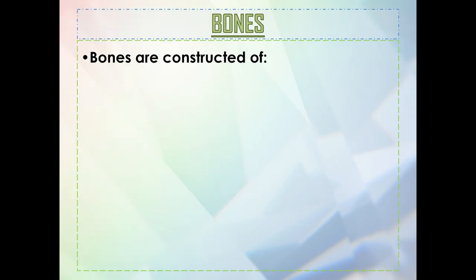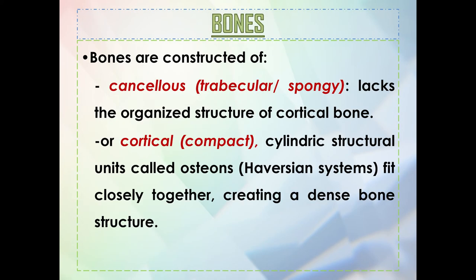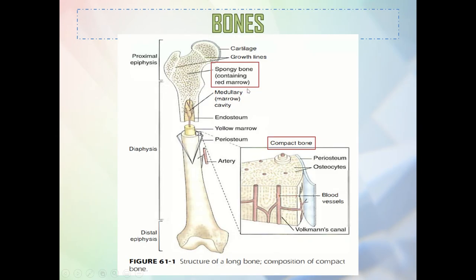Bones are constructed of two main types. You have cancellous, also known as trabecular or spongy, which lacks the organized structure of a cortical bone. While cortical, also known as compact, has cylindrical structural units called osteons that fit closely together creating a dense bone structure.